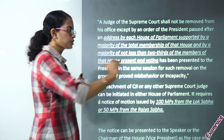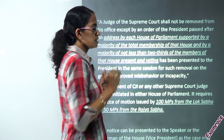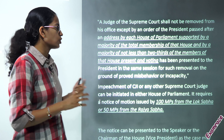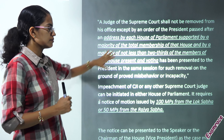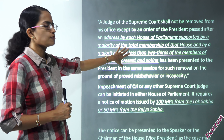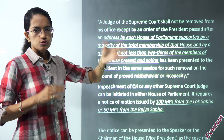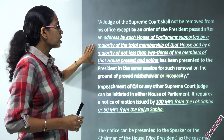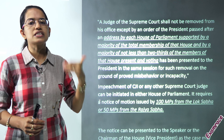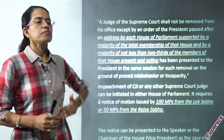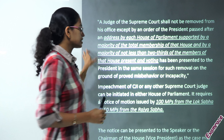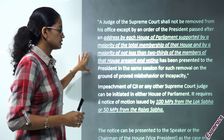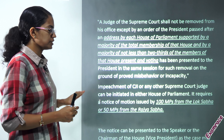How is this impeachment passed? The impeachment should be supported by the majority of the total members of the house. It includes both houses and not less than two-thirds of the members present and voting. That is the key criteria we need to understand for the impeachment.